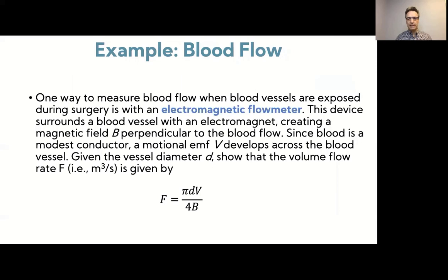The final example is more in the medical field, and it's about measuring blood flow. So one way to measure blood flow when blood vessels are exposed during surgery is with an electromagnetic flowmeter, which essentially is a device that surrounds a blood vessel with an electromagnet. So now you create a magnetic field perpendicular to that blood flow. Blood itself is a conductor, a modest conductor, and so there will be a motional EMF that develops across the blood vessel. And so if you know that the diameter of your blood vessel is D, can you show that that flow rate, that volume flow rate, which is in cubic meters per second, is given by this expression here, pi times the diameter times that motional EMF D over 4B.